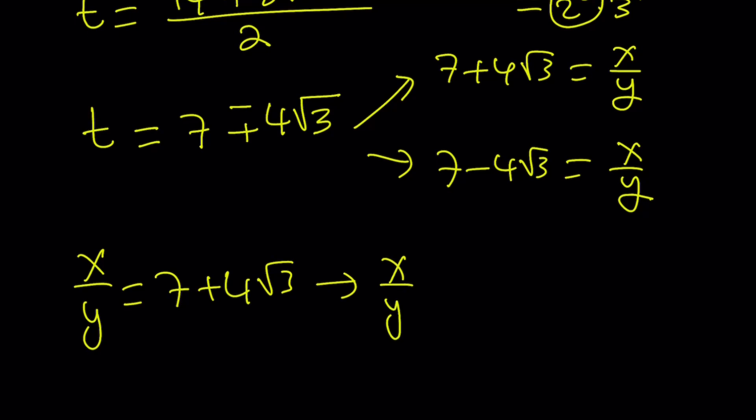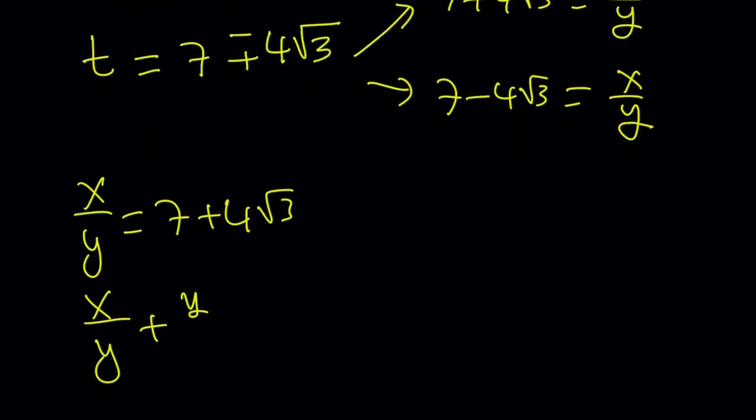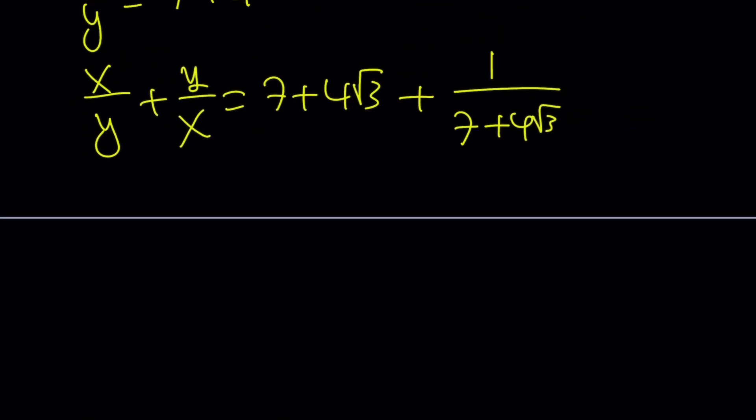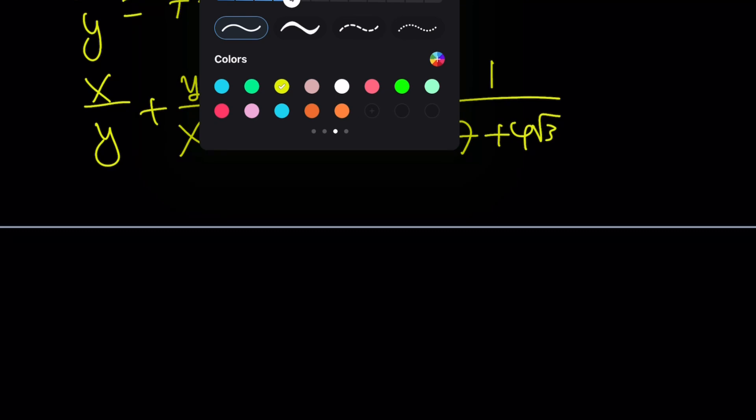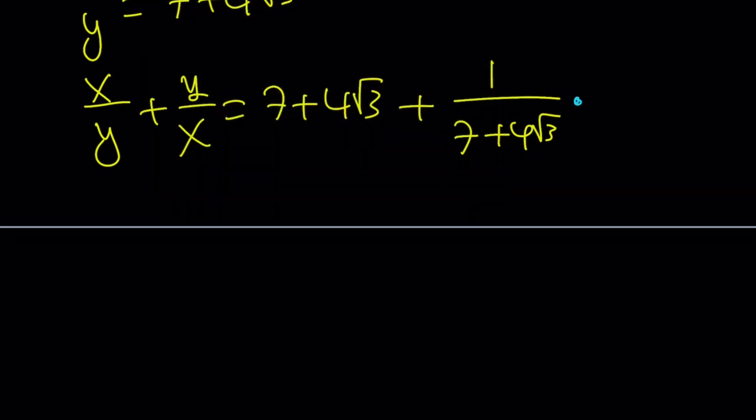So if x over y is 7 plus 4 root 3, then x over y plus y over x becomes 7 plus 4 root 3 plus 1 over 7 plus 4 root 3. So we're supposed to add the reciprocals, but to deal with the reciprocals of radicals, we're going to use conjugates. So multiply and divide by 7 minus 4 root 3, so you can rationalize the denominator.